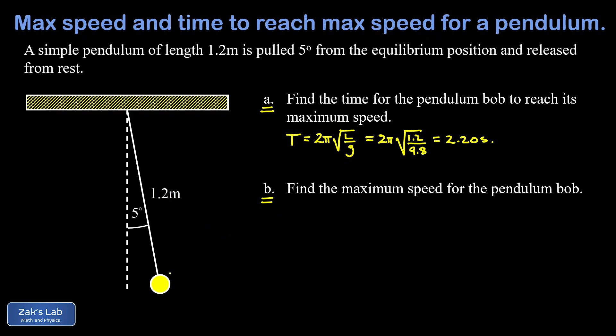Now again, the time to get from our original highest position down to the equilibrium position, that's exactly one quarter of a period because a period is a full oscillation all the way to the left and all the way back to the right, and we're just getting halfway to the left here. So a quarter period, so we're going to take this and divide by four. In other words, one quarter period is the time we're looking for, and to three significant digits this gives us 0.550 seconds.